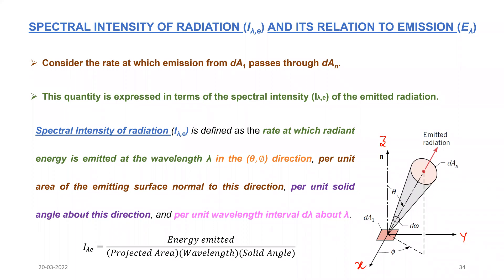Today we are going to discuss about spectral intensity of radiation, i_lambda_e, and its relation to emission, e_lambda. So spectral intensity of radiation and its relation to e_lambda.